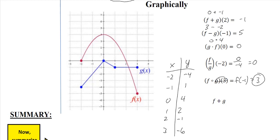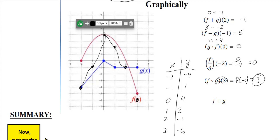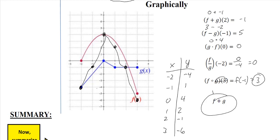I'm going to graph those points now: (−2, −4), (−1, 1), (0, 4), (1, 2), (2, −1), (3, −6). Plot the dots and draw a line through them. That's all you're doing — plotting the points and connecting them. That's f plus g graphically. Any questions? Good luck — deuces.